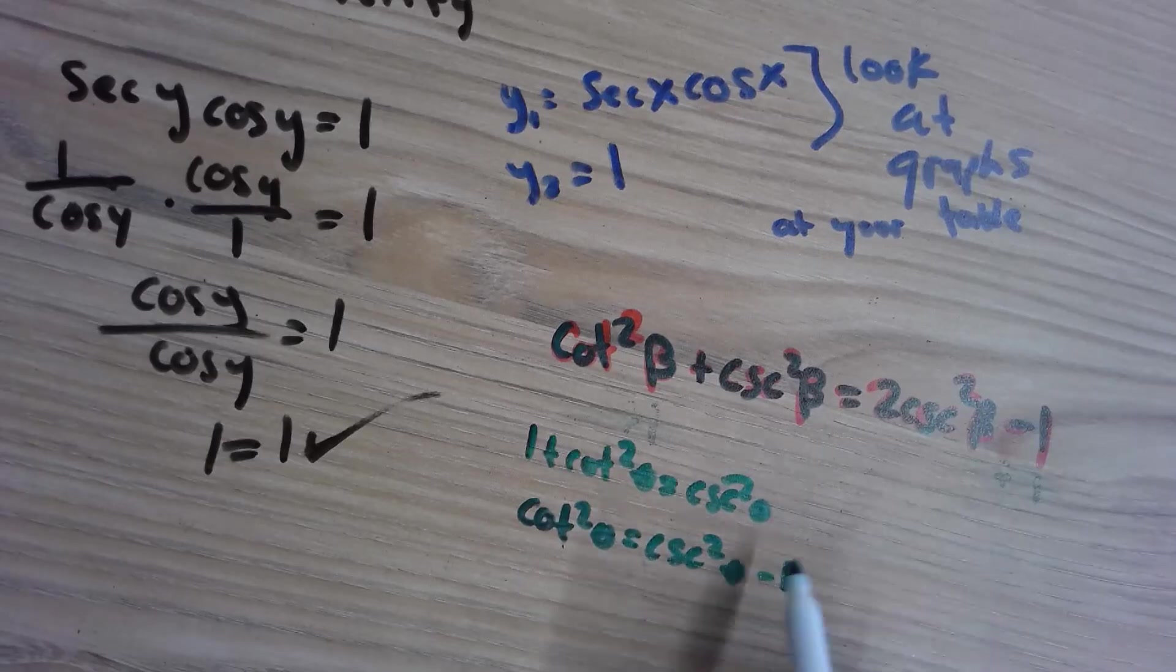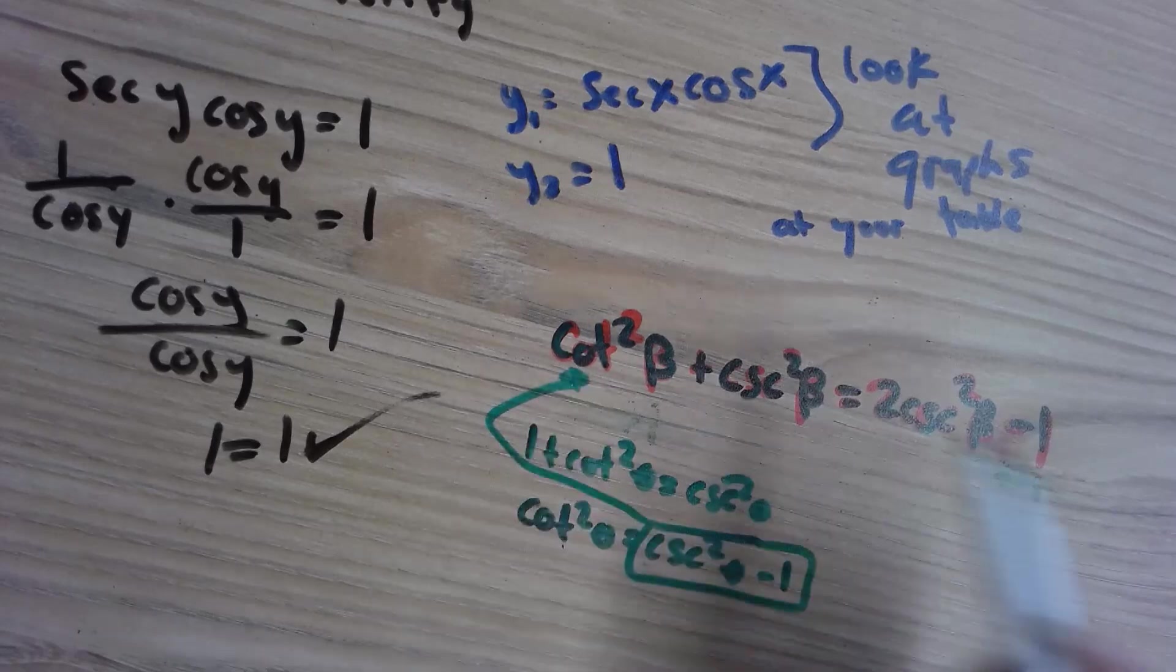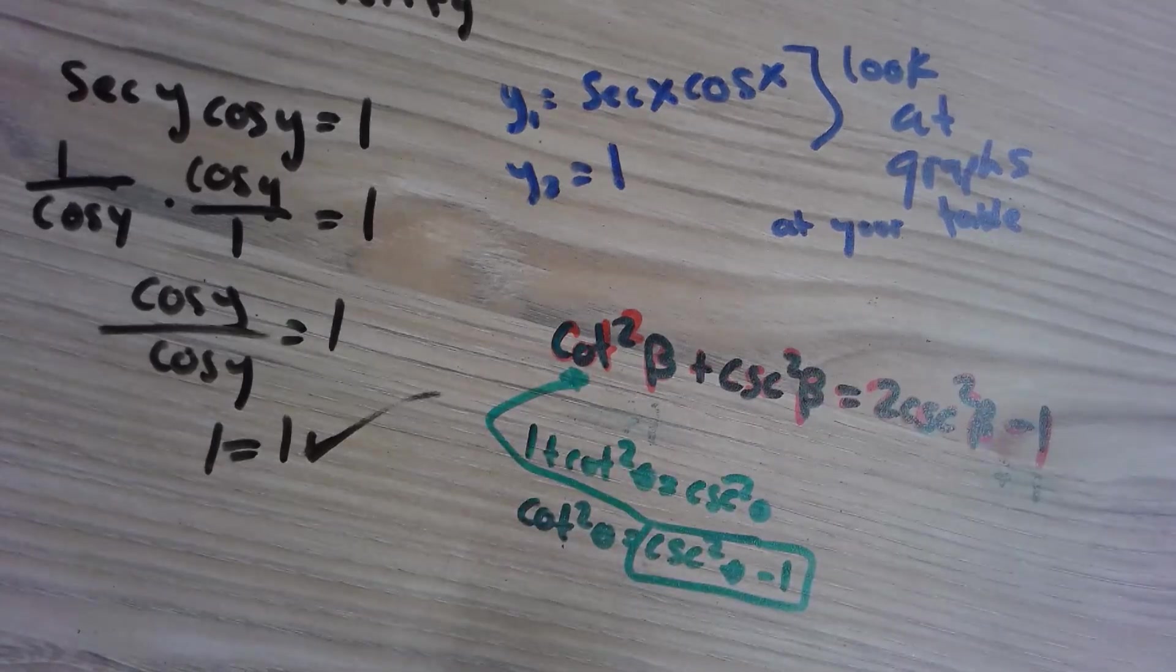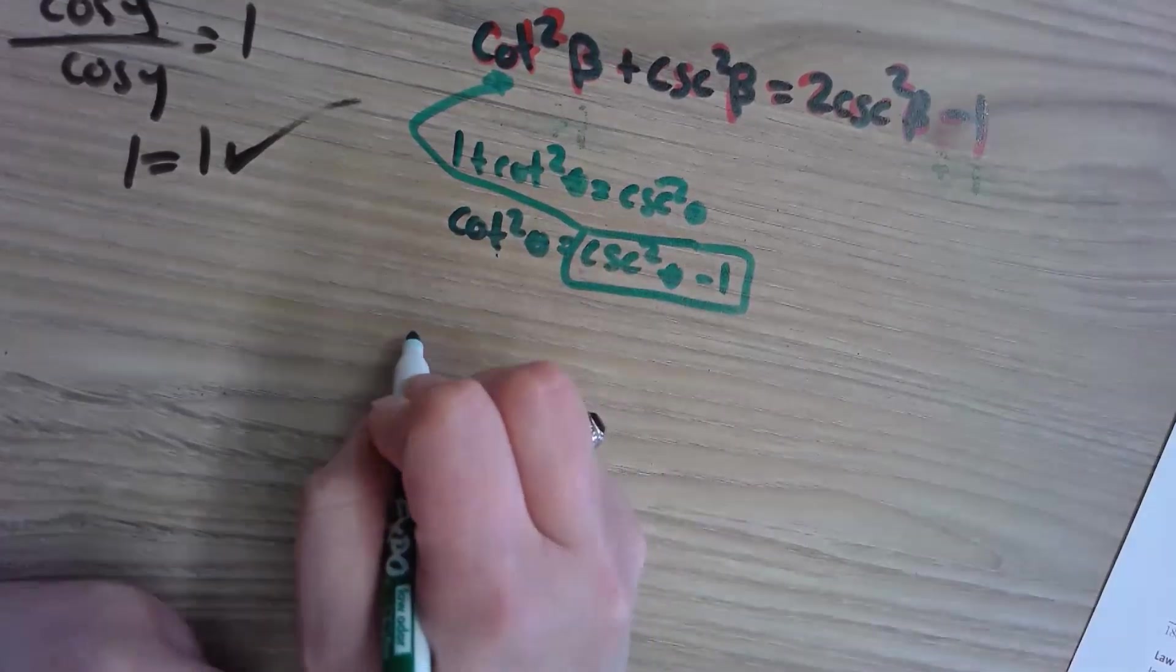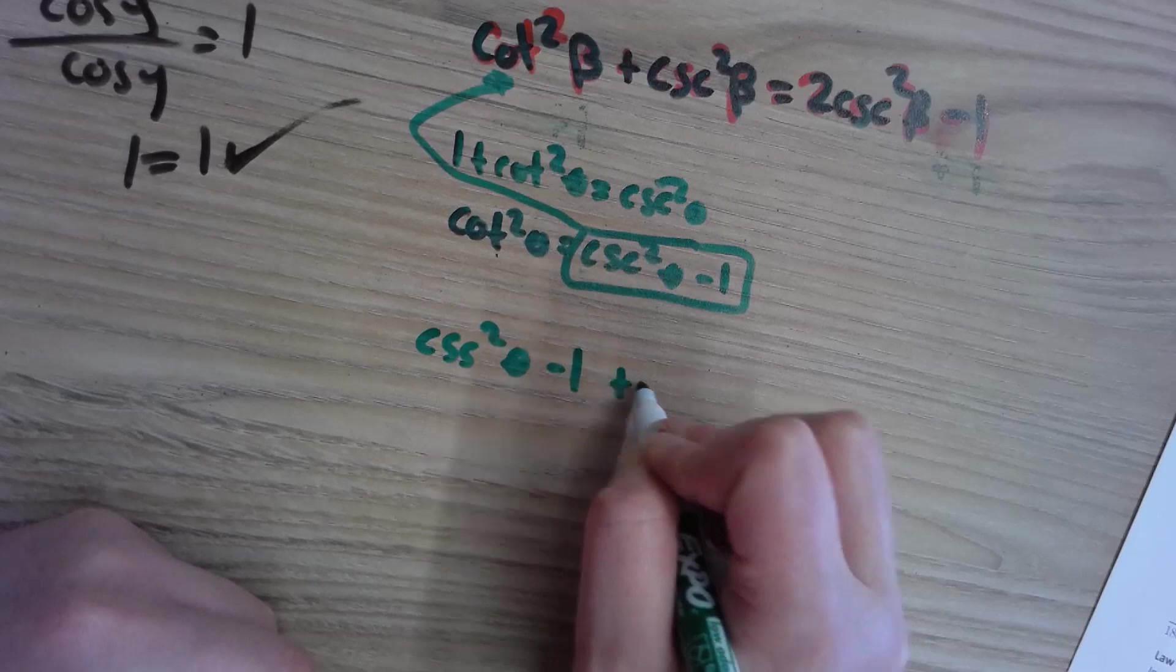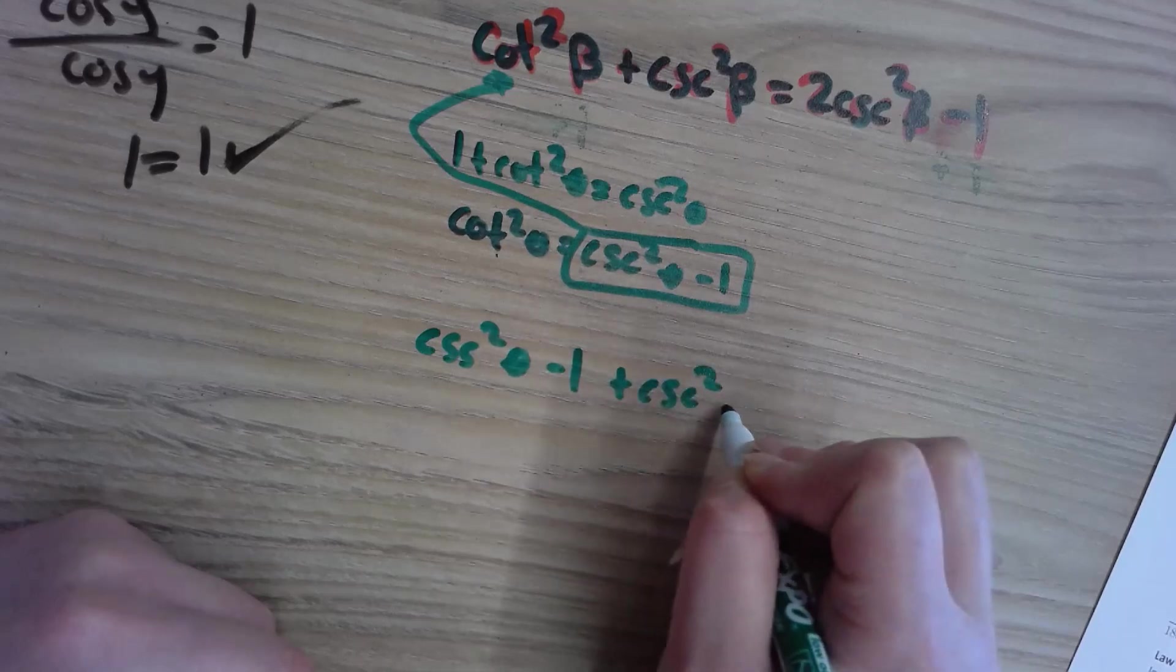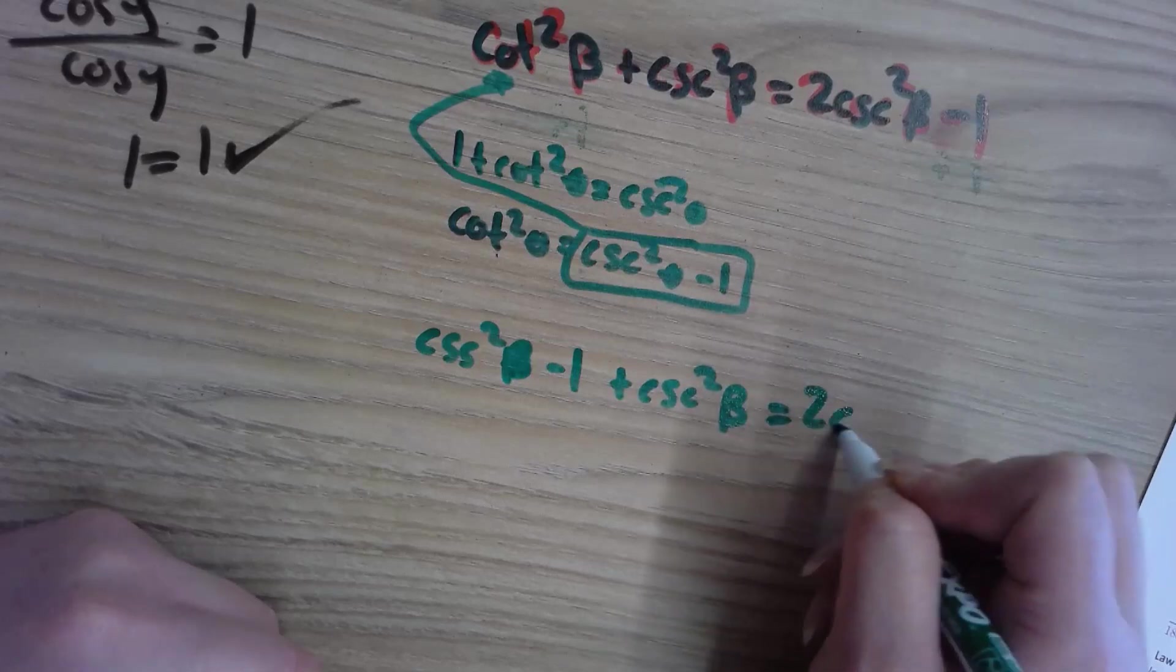So I'm going to take this and I am going to substitute it in. I'd get cosecant squared theta minus one plus cosecant squared beta equals two cosecant squared theta minus one.